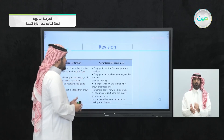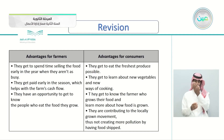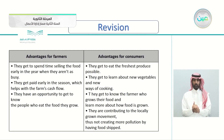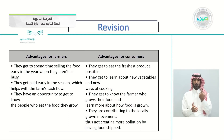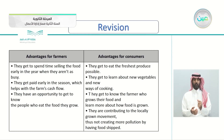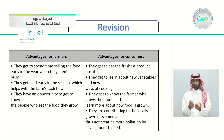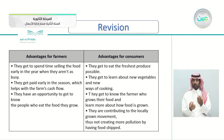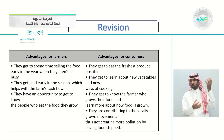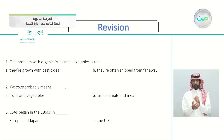Advantages for consumers: first, they get to eat the freshest produce possible because they're getting it directly from the farm. Second, they get to learn about new vegetables and new ways of cooking. Third, they get to know the farmer who grows their food and learn more about how food is grown. Fourth, they are contributing to the locally grown movement, thus not creating more pollution by having food shipped.